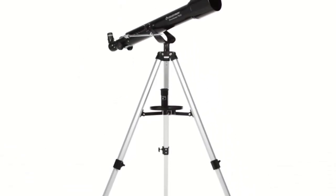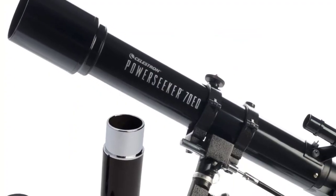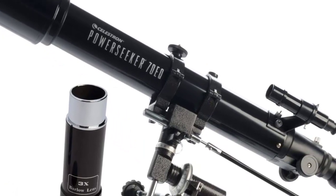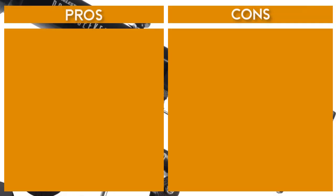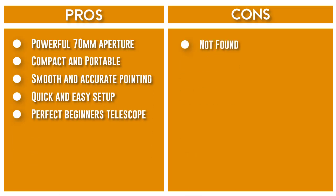With the Celestron AstroMaster 130EQ Newtonian reflector, you'll be able to view Saturn's rings, Jupiter's Galilean moons, the moon's craters, and more. This telescope is ideal for kids and adults to use together and is sure to provide a lifetime of wonderful astronomy experiences.